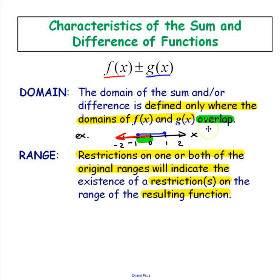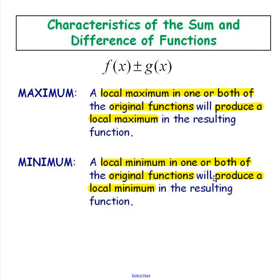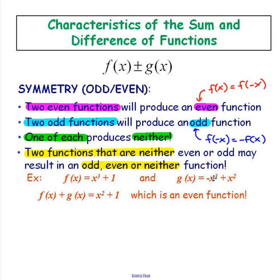Your range is going to depend on each of the graph's ranges. So if red or blue has some sort of restriction, you're going to see some restrictions in your combined graph. If you have a max or min in any of your original functions, you'll probably have a max or min in your combined function. If you put two even functions together, you're going to get your combined function will be an even function. If you have two odd functions, you're going to produce an odd function. If you have one of each, both of your functions put together will not be even or odd. And if you have two functions that are neither, you can have an odd, even, or neither function that is the combination of both.